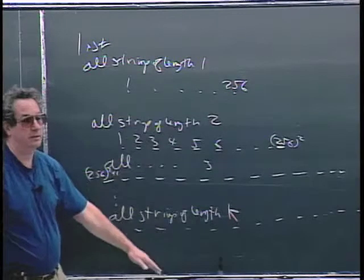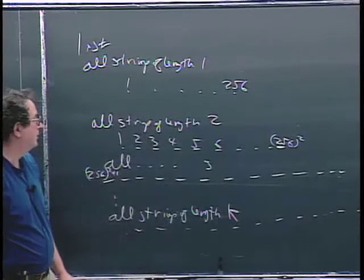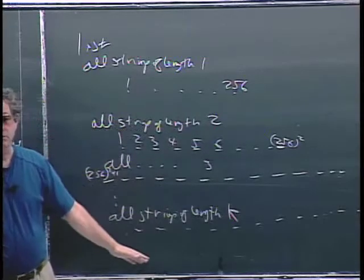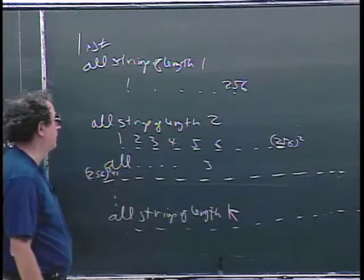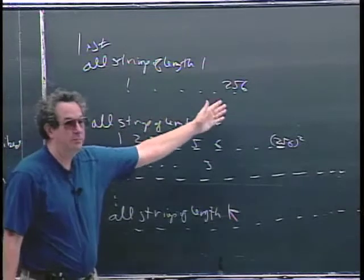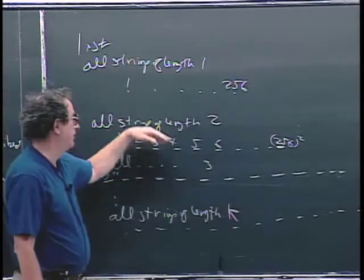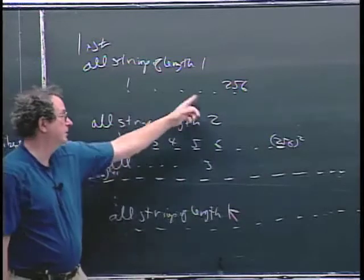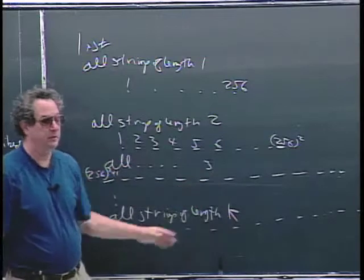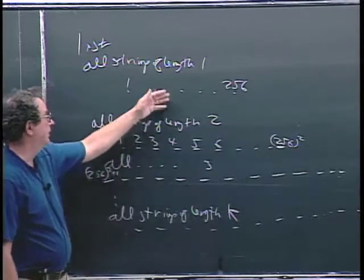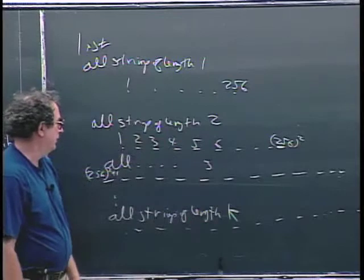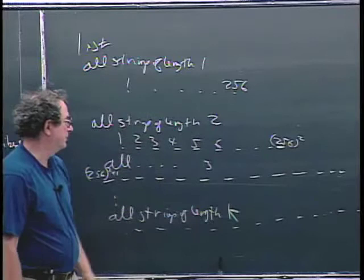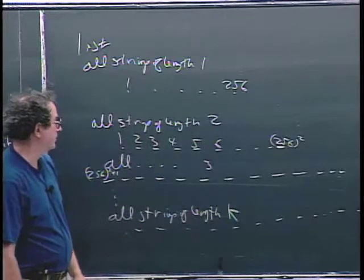Some of these strings represent Turing machines and some of them don't. If I want to, I can go through here, clean up, and remove any that don't describe Turing machines. The fact that I can put the strings in one-to-one correspondence with the natural numbers, and then throw away any that are not Turing machines, means I can certainly put the Turing machines in one-to-one correspondence with the natural numbers.